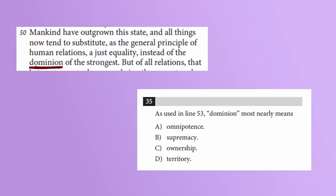Here's an example. Even though I honestly probably couldn't give you a definition of dominion out of context of this paragraph, I have a general idea of what it's supposed to mean here because of the surrounding sentence. Mankind have outgrown the state, and all things now tend to substitute, as the general principle of human relations, a just equality instead of dominion of the strongest. So mankind is substituting equality for this overwhelming power that the strongest had before. If we go to our answer choices and do a quick plug-in, ownership of the strongest or territory of the strongest sound like they're controlling the strongest instead of having the strongest doing the controlling, or that the strongest have some kind of physical land instead of just the hypothetical power. Omnipotence I know I've heard in a more religious sense, and it might suggest something too powerful than what's here. Supremacy of the strongest is the way to go. It sounds the least bad when it's plugged in.